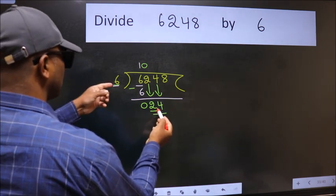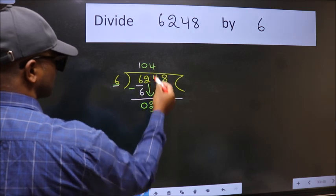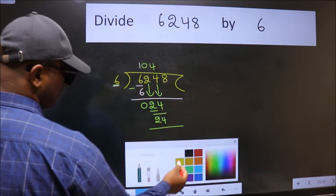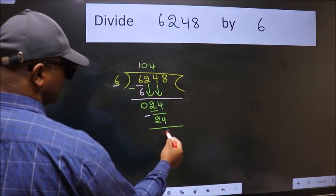When do we get 24 in the 6 table? 6 fours is 24. Now, we subtract. We get 0.